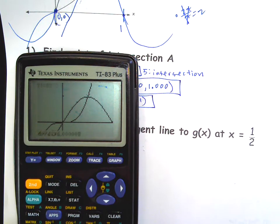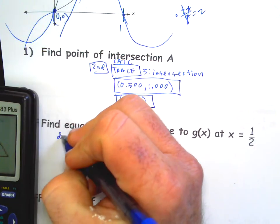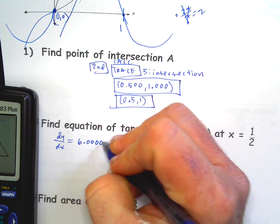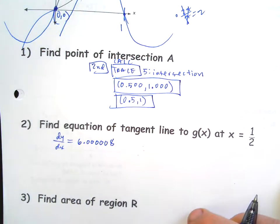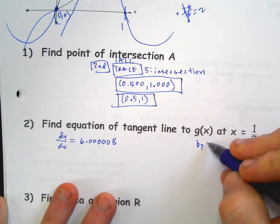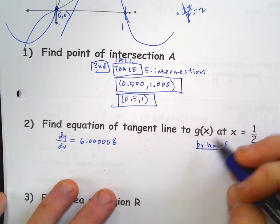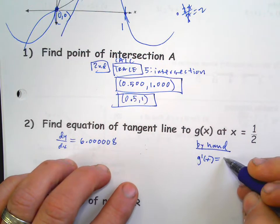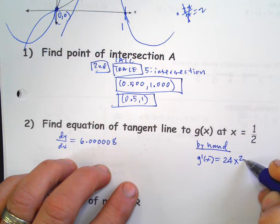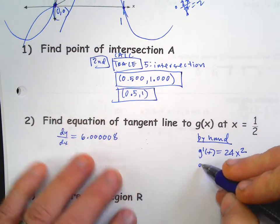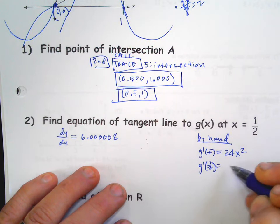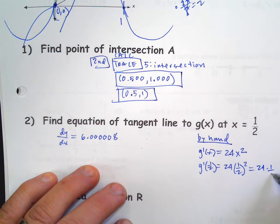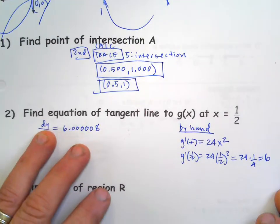We want it of the g function, which is this one, and we type in at 0.5 and it tells us what it is. It says dy dx equals six point zero zero zero zero zero eight. Now I think probably it's specifically supposed to be six. If we did this by hand, which is something I'm not expecting you to do yet, but the derivative of a power, you multiply the power in front and decrease it by one. So that's the derivative, and then you could plug one half into it.